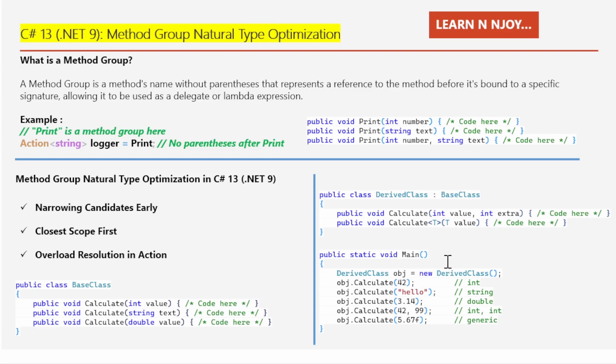If you see in the main method, I'm just creating an instance of the derived class. That's what I have written: derived class obj equals new derived class. And with the help of the derived class object, I'm calling this calculate method. So if you see the first one, obj.calculate(42), I'm passing an integer number 42.